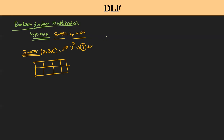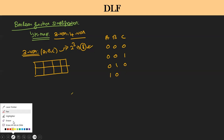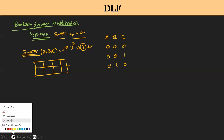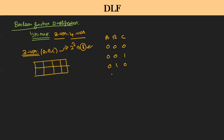So what are they? A, B, C: 0,0,0 then 0,0,1 then 0,1,0 then 0,1,1 then 1,0,0 then 1,0,1 then 1,1,0 then 1,1,1. These are the possible combinations. And you will be getting the corresponding output Y.